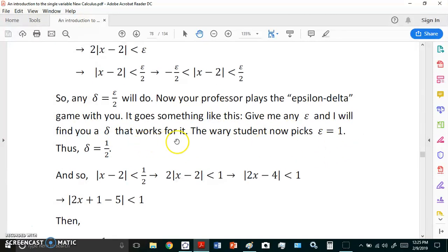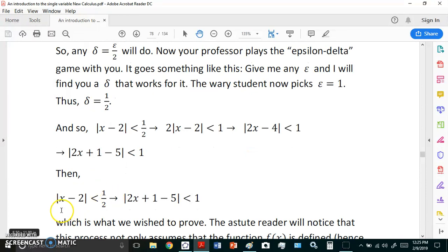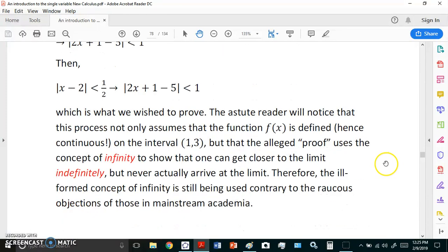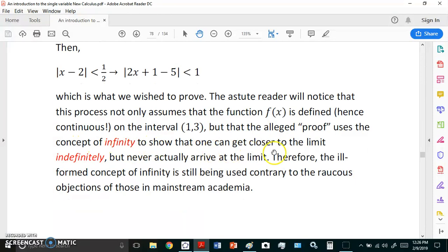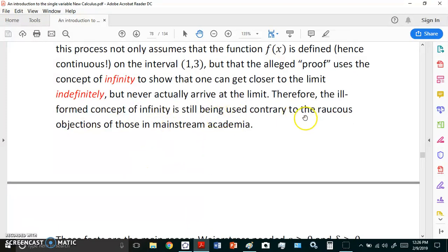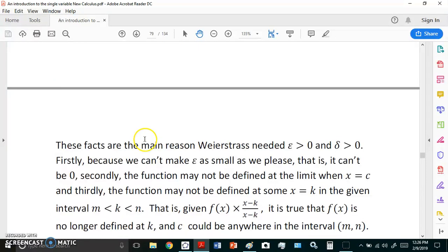Give me any epsilon and I will find you a delta that works for it. So if you pick, let's say for example epsilon equals 1, then it's true that the absolute value of x minus 2 less than a half implies that the function is less than 1 at the point x equals 2, which is what we wish to prove. So the astute reader will notice that this process not only assumes the function is defined and hence continuous on this interval (1,3) but that the alleged proof, it's actually a fake proof, uses the concept of infinity to show that one can get closer to the limit indefinitely but never actually arrive at the limit. Therefore the ill-formed concept of infinity is still being used contrary to the raucous objections of those in the mainstream academia.